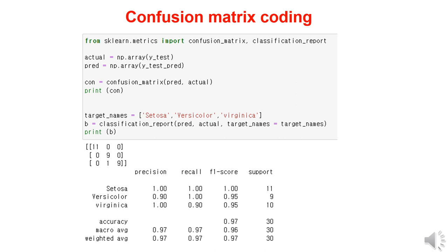To create a confusion matrix and calculate the F1 score based on the results obtained so far, import the confusion_matrix and classification_report libraries. First, store the actual and predicted iris species results in the actual and pred variables as arrays. Then, create the confusion matrix using these variables — it will be displayed as the output. Additionally, input the names of the three iris species — Setosa, Versicolor, and Virginica — and execute the classification_report command. This will provide the precision and recall values for each species, as well as the overall accuracy and F1 score. If you want to apply this to other AI classification models used so far, you can connect them in the same way.